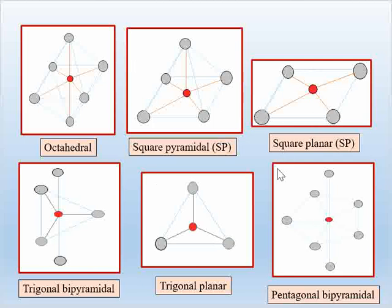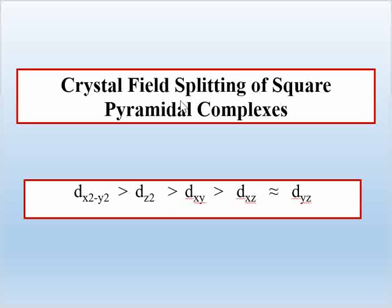First, we will study the crystal field splitting of square pyramidal complexes. You will find the following order of energy of d orbitals: dx²-y² will have the highest energy, and dxz and dyz will have the lowest energy.